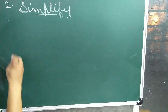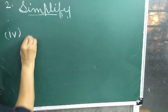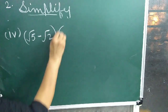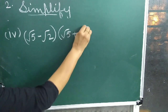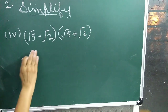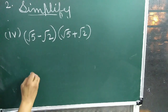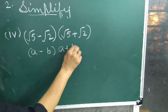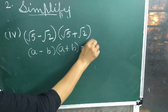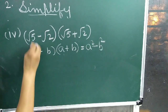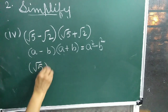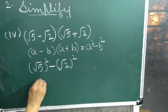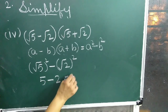Fourth question: root 5 minus root 2 into root 5 plus root 2. This is in the form of the third identity, a minus b into a plus b, equal to a square minus b square. So root 5 whole square minus root 2 whole square equals 5 minus 2, that is 3.